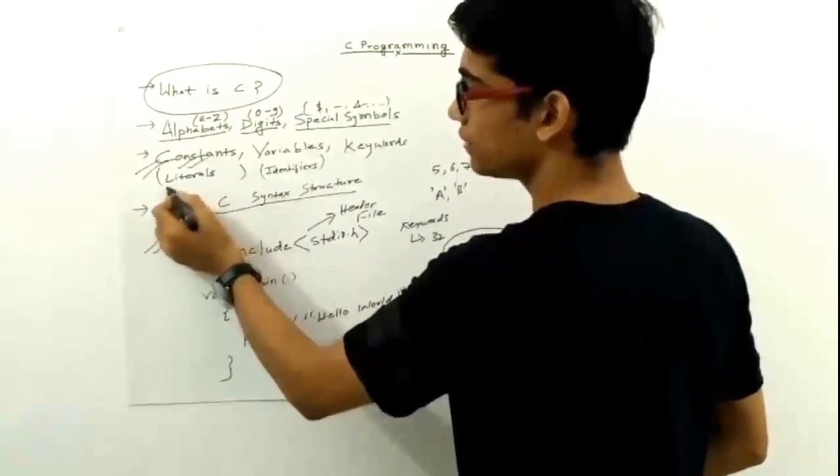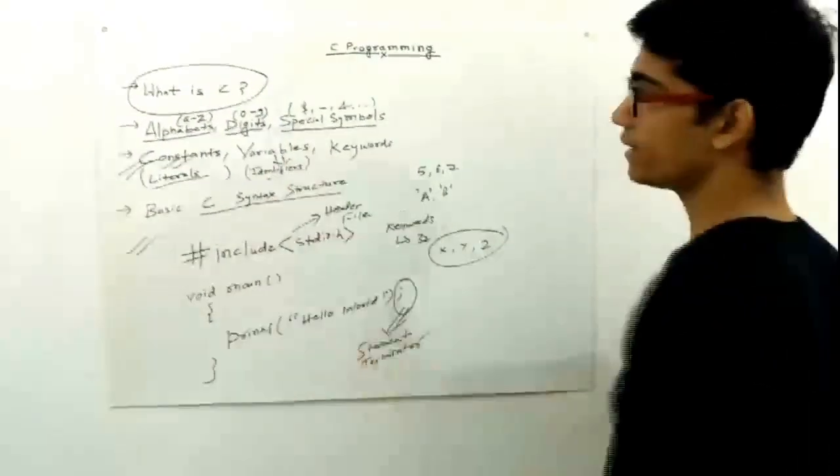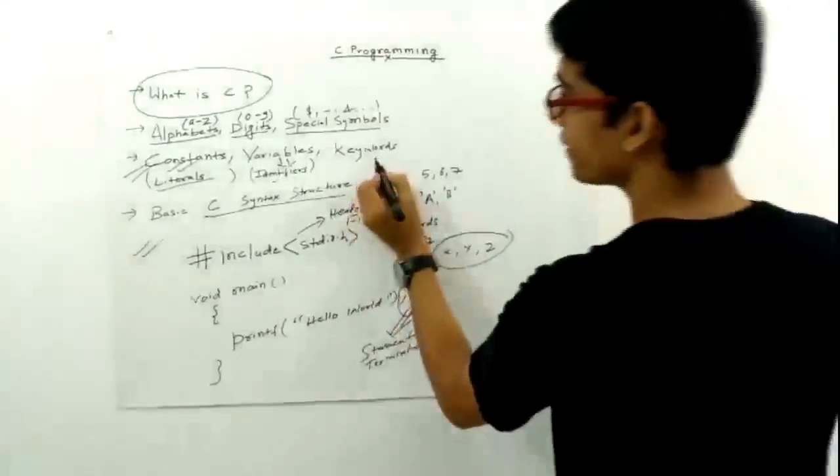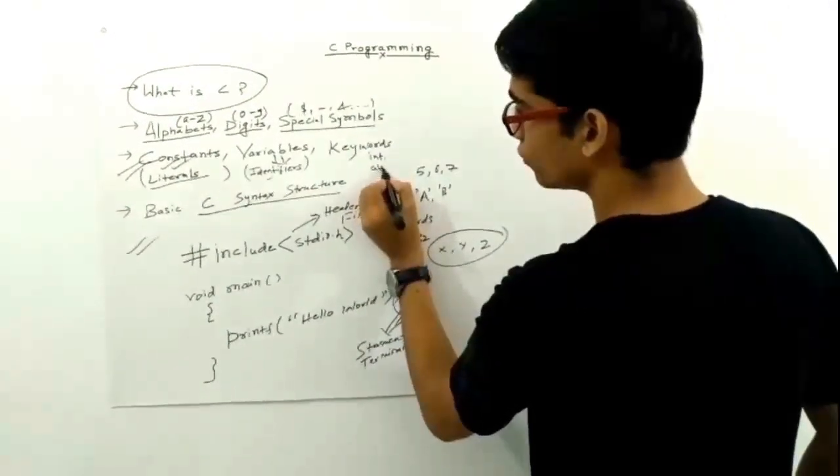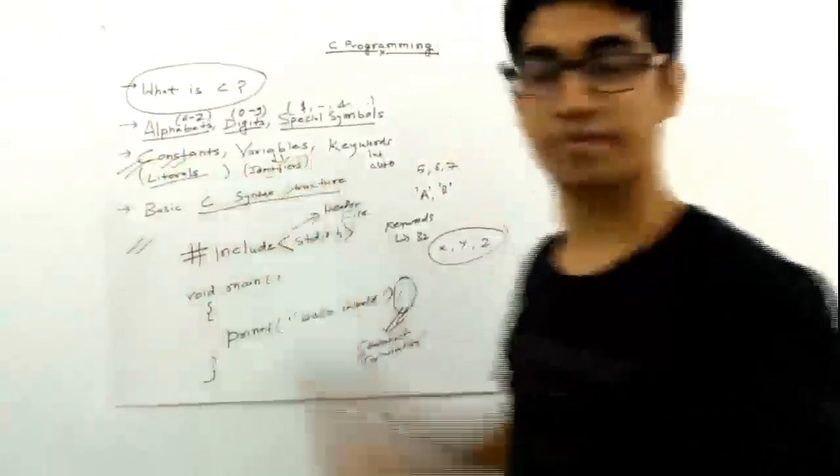So every constant is known as literals in C, and variables are generally termed as identifiers, and keywords are like 'auto'. These things we will analyze in depth in our next video lecture. Thank you all.